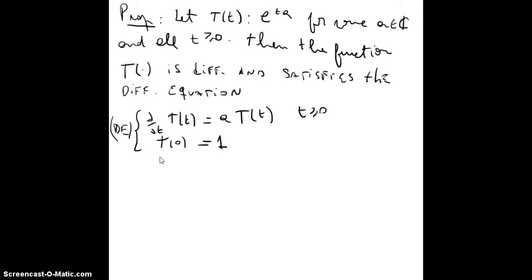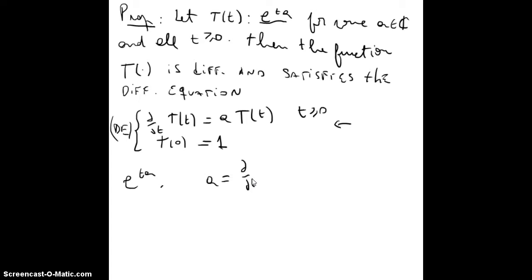Conversely, this function e^(tA), for some A in the complex numbers, is the only function that satisfies this differential equation. And we observe that A is equal to the derivative of f(t) at t = 0.